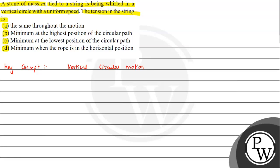Let's assume this is the circular path. In this circular path, we have lowest and highest positions defined. This is the highest point, let's say A, and this is the lowest point B.